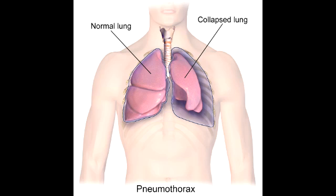What is spontaneous pneumothorax? Spontaneous pneumothorax is when there is accumulation of air in the pleural space. It commonly occurs in tall, thin, young males because of rupture in the apical blebs.